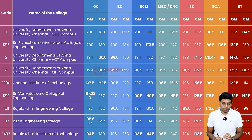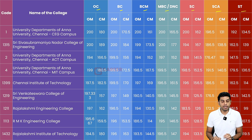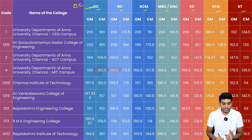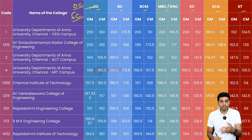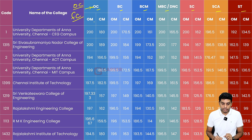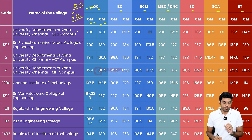On the first tab of the table, there is OC, BC, BCM, MBC, DMC, SC, and ST — these are the community reservation categories. OC/OCM is nothing but Other Caste, meaning students who come under the forward caste. The OMCM refers to the Opening Mark and Closing Mark. For example, in Anna University CEG Campus, the opening mark and closing mark indicate the range of marks admitted.